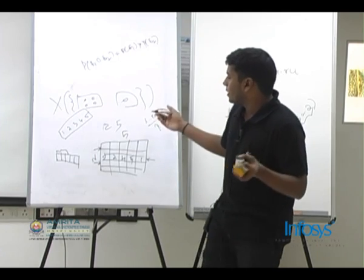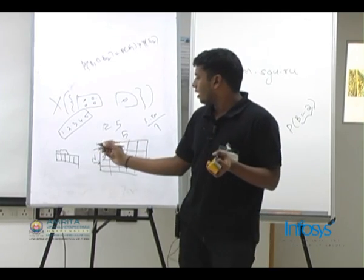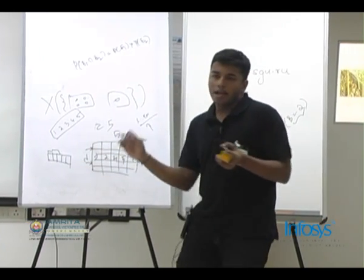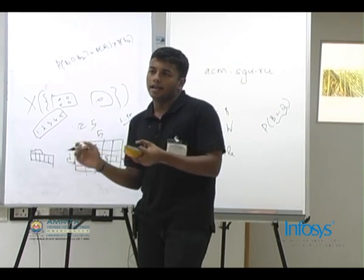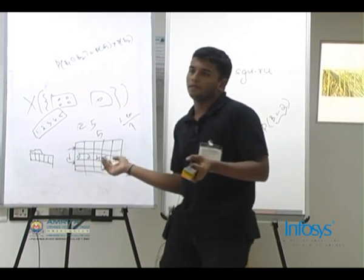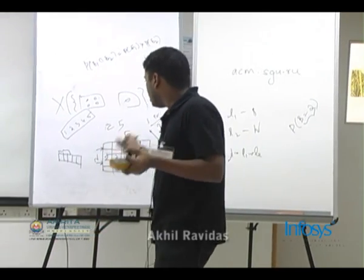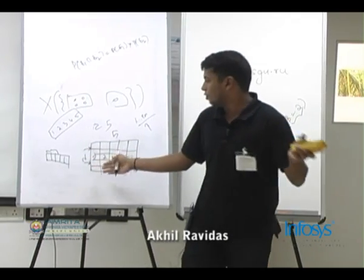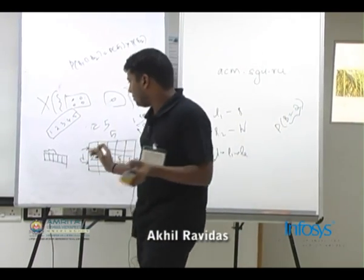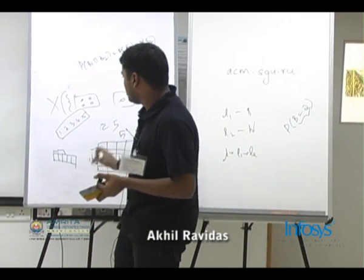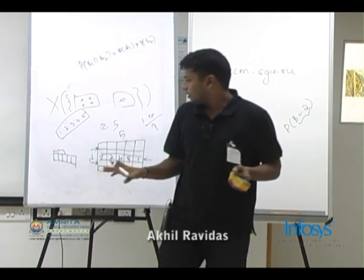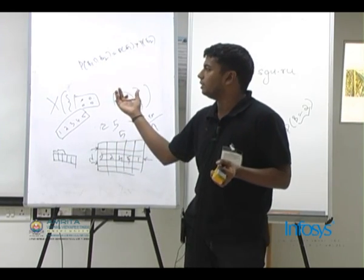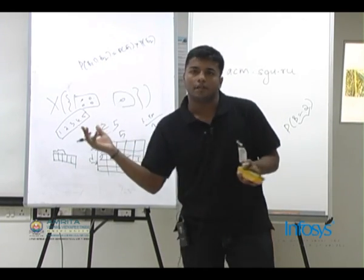So we can just compute the probability for exactly three winning numbers, add it to the probability for exactly four, and add it to the probability for exactly five. Finally, multiply by the number of rows, which is n. So: what is the probability that a given row has exactly three numbers from the winning numbers and two numbers from the non-winning numbers?